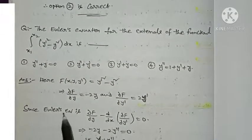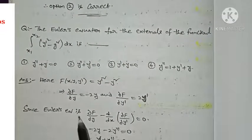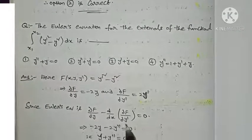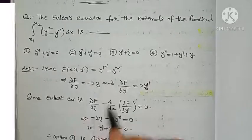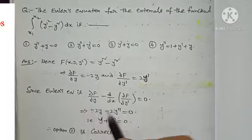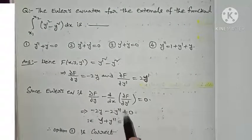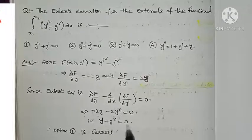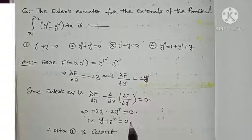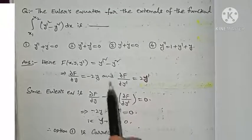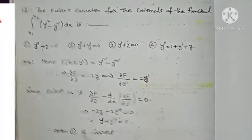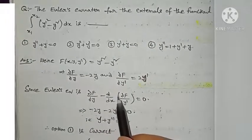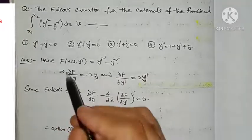Applying Euler's equation ∂F/∂y − d/dx(∂F/∂y-dash) = 0, substituting gives −2y − 2y-double-dash = 0, that is y-double-dash + y = 0. So option number 1 is the correct answer.